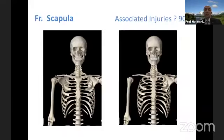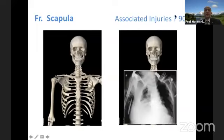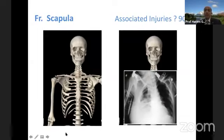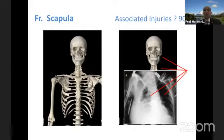When you have a fractured scapula, don't think of it as just a bony injury. It's quite a serious injury — in up to 90% of cases there is an associated injury. Don't forget the ribs, lungs, shoulders, and cervical spine. It's quite a serious injury when you see a scapula. Look outside the scapula before you focus on the bone, and treat those associated injuries before addressing the scapula itself. Fixing the scapula is rarely urgent.